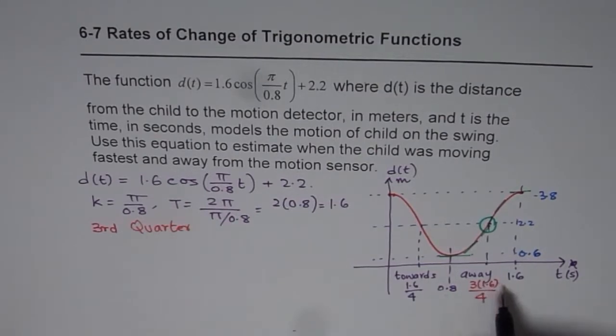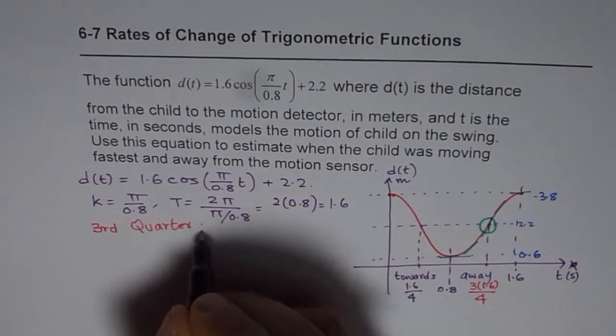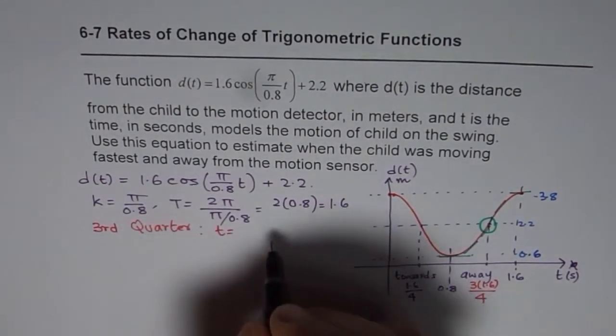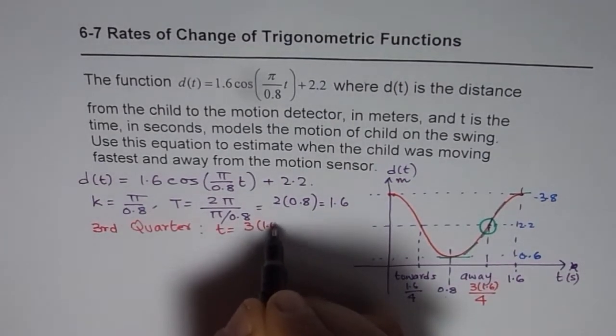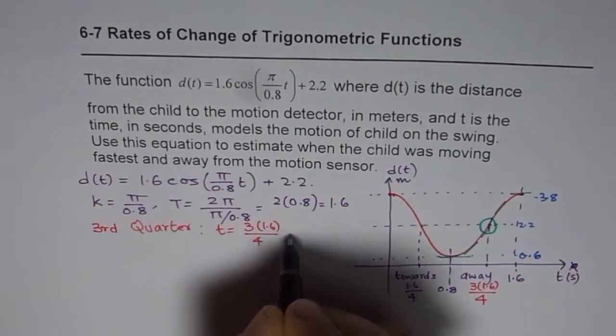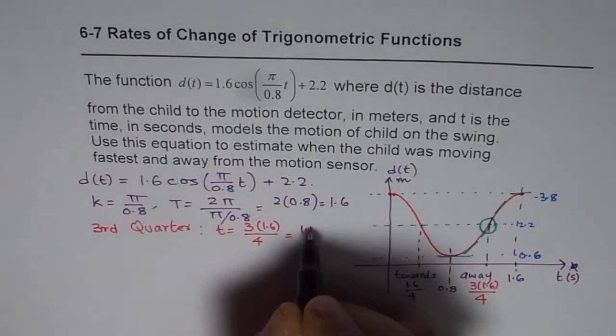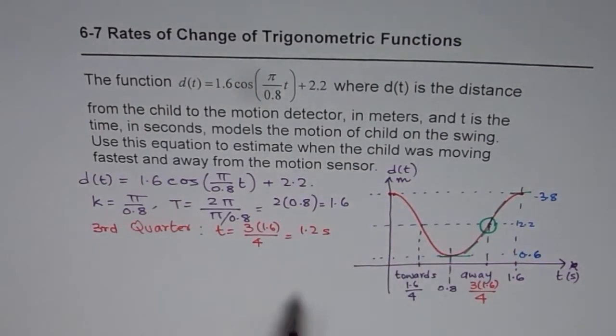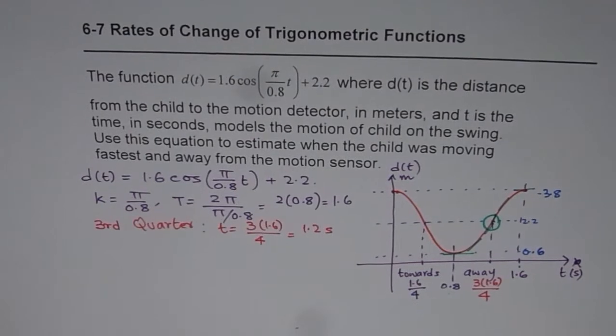So if you calculate this point, 3 times 1.6 divided by 4, 1.6 divided by 4 is 0.4, so 0.4 times 3 is 1.2. So that is the time when the instantaneous rate of change is going to be maximum.